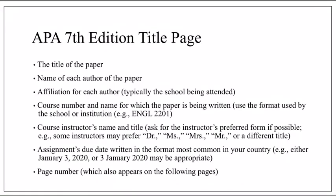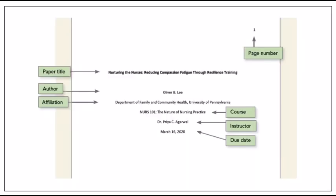In APA 7, the title page is quite a bit different. It will have the title of your paper, the name of the author or authors, your school affiliation, the course number, your instructor's name, and the date the paper is due, as shown in this example.